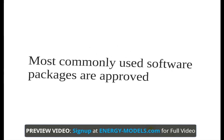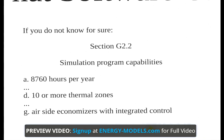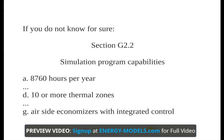Keep in mind that most big-name software packages are LEED approved, but if you do not know, consult Standard 90.1, Appendix G, Section 2.2. It lists required program capabilities such as modeling 8,760 hours per year, 10 thermal zones or more, and also more specific requirements like the ability to model an economizer with integrated control.